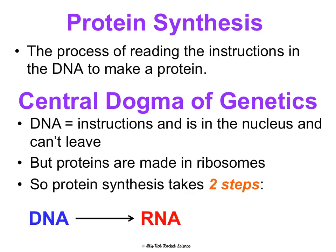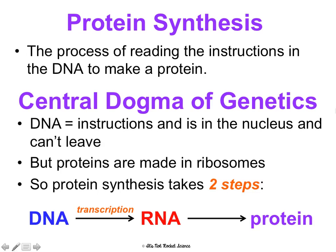DNA is going to be copied into RNA, and that RNA will then be translated into a protein. The process of going from DNA to RNA is called transcription, and the process of going from RNA to protein is called translation. Transcription and translation are the two steps of protein synthesis.